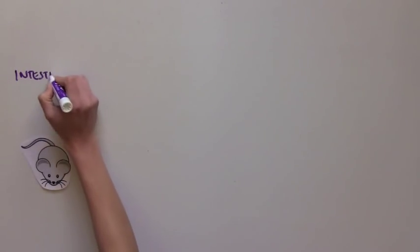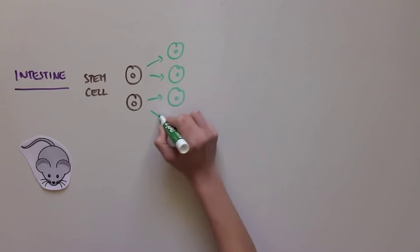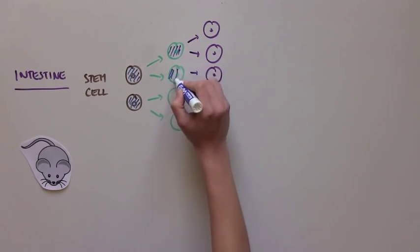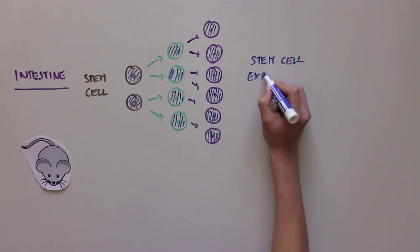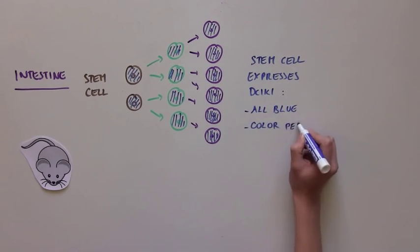So the scientists focused on the intestines of these mice. Because the stem cells produce all of the cells that make up the intestinal tissue, if a stem cell contains DCLK1, then the whole intestinal tissue will be blue. And this blue color will persist, because the stem cells keep dividing.